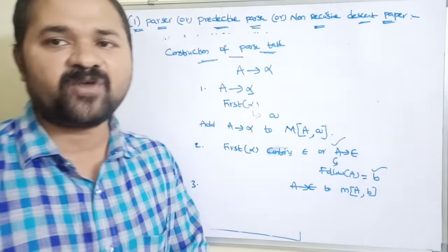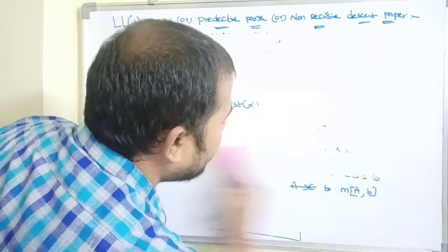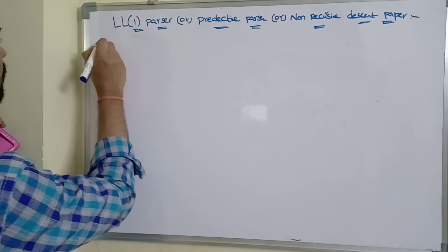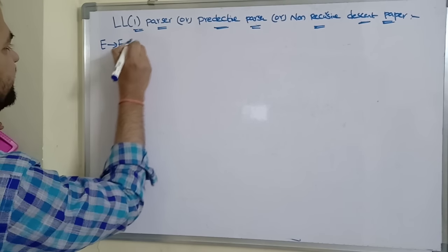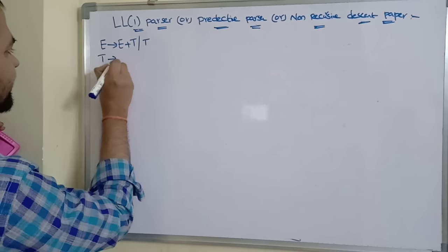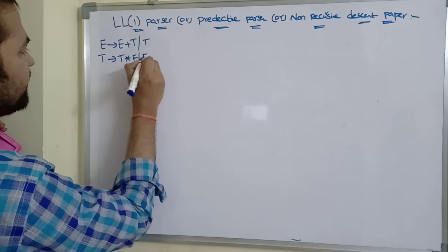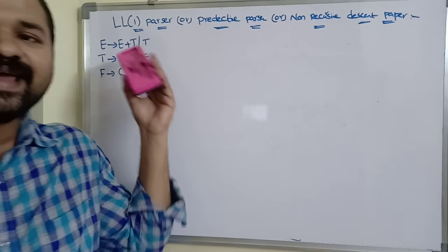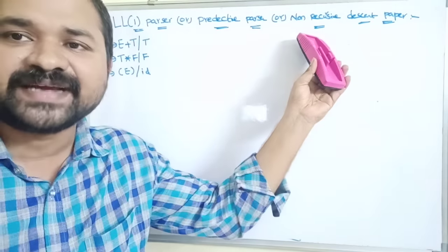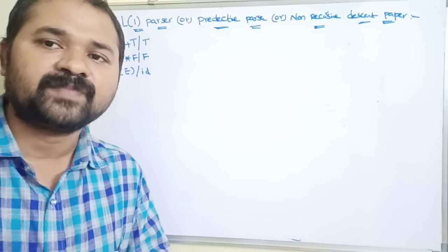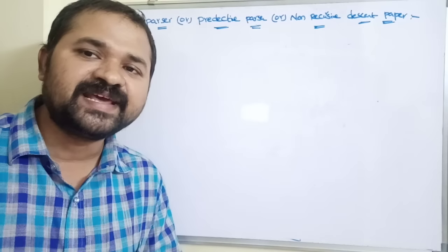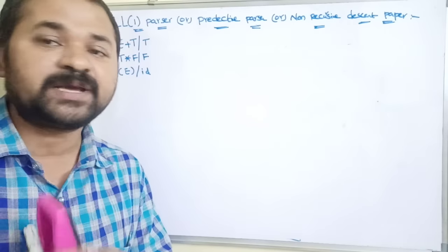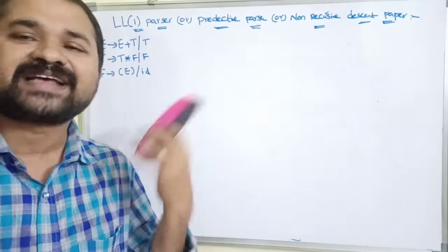Now let us take an example. The grammar is: E implies E plus T or T; T implies T star F or F; F implies left parenthesis E right parenthesis or ID. We have to construct an LL(1) parser for this grammar. Step 1: elimination of left recursion; Step 2: elimination of left factoring; Step 3: calculation of first and follow; Step 4: construction of parsing table; Step 5: check whether the input string is accepted.